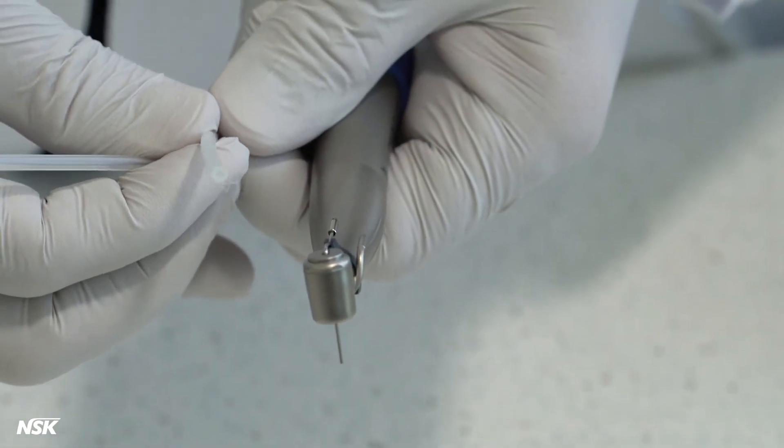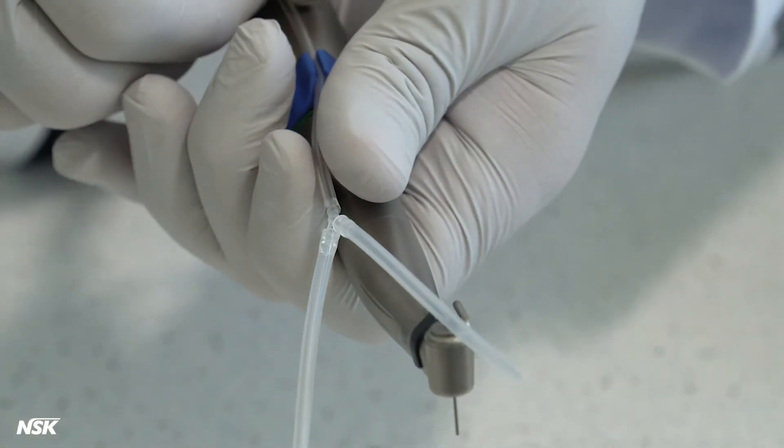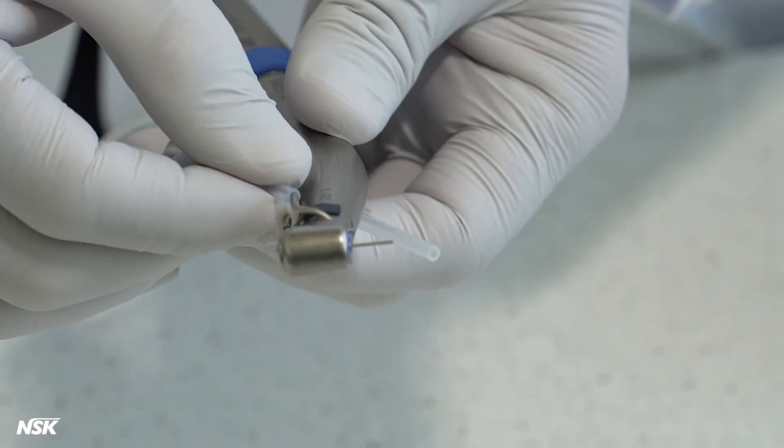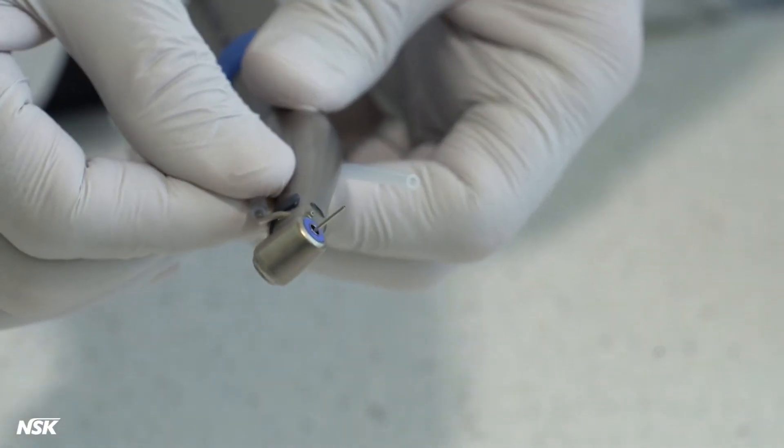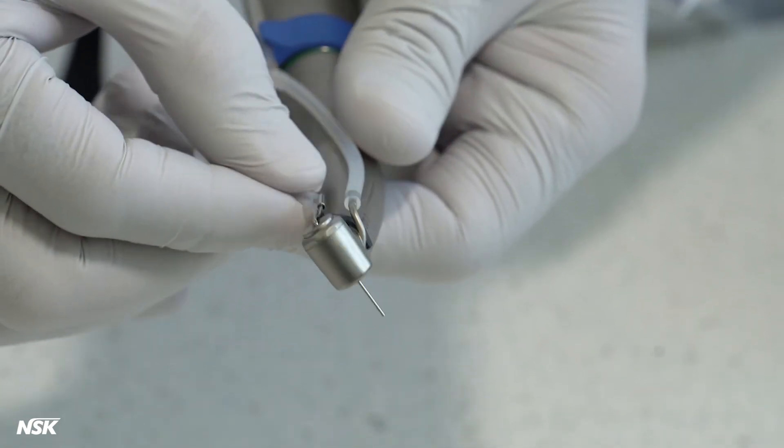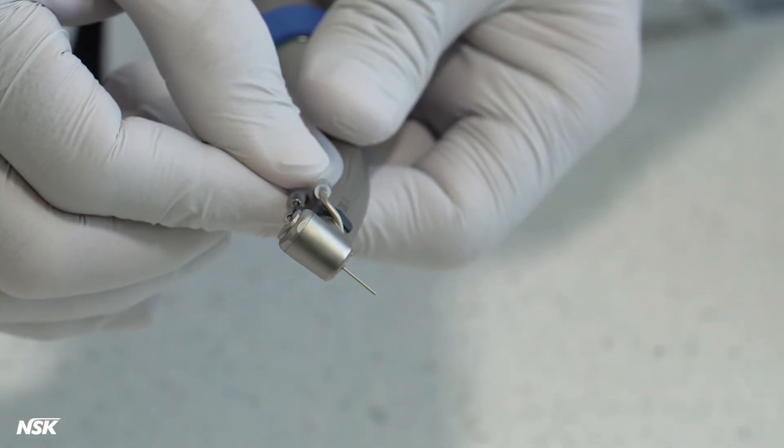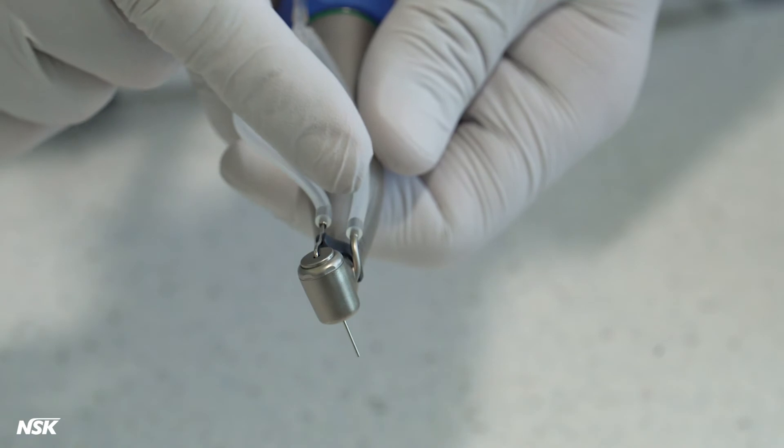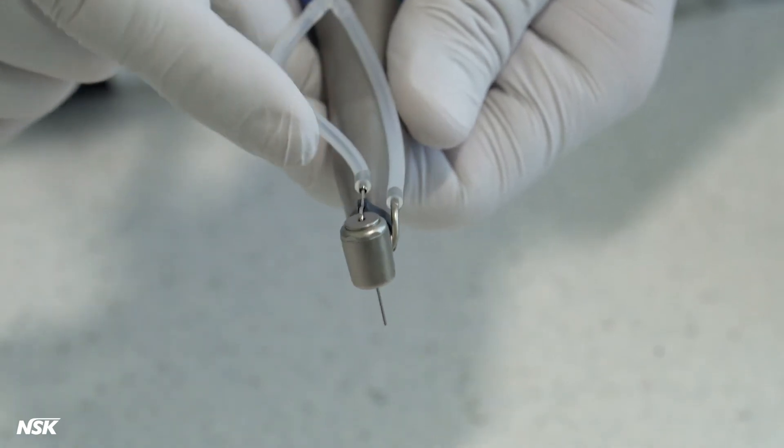Simply connect the Y connector to the end of the main irrigation tube. Then, connect one of the water supply tubes to the external spray nozzle, so the free end of the Y connector is connected to the internal spray nozzle. This dual irrigation setup is only used in unique cases with certain drills.